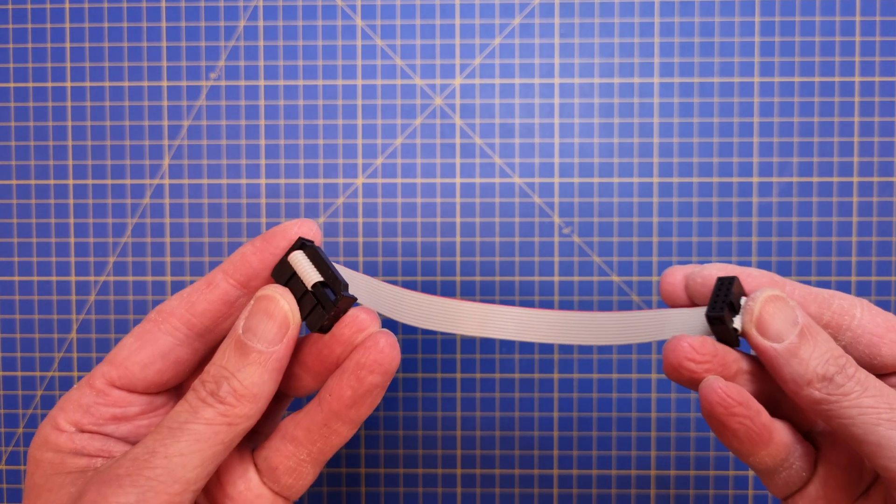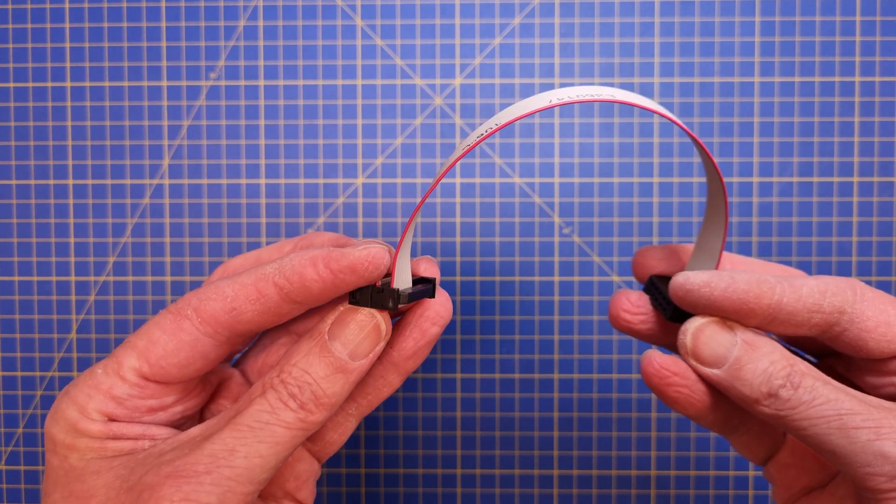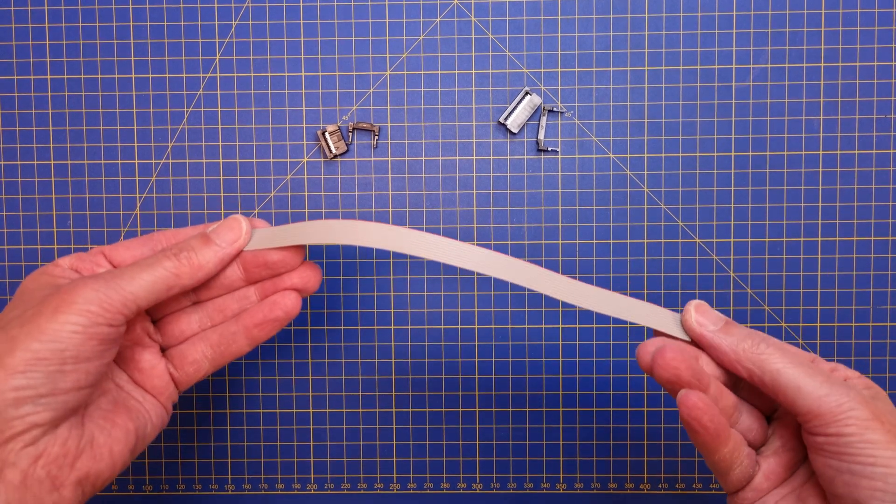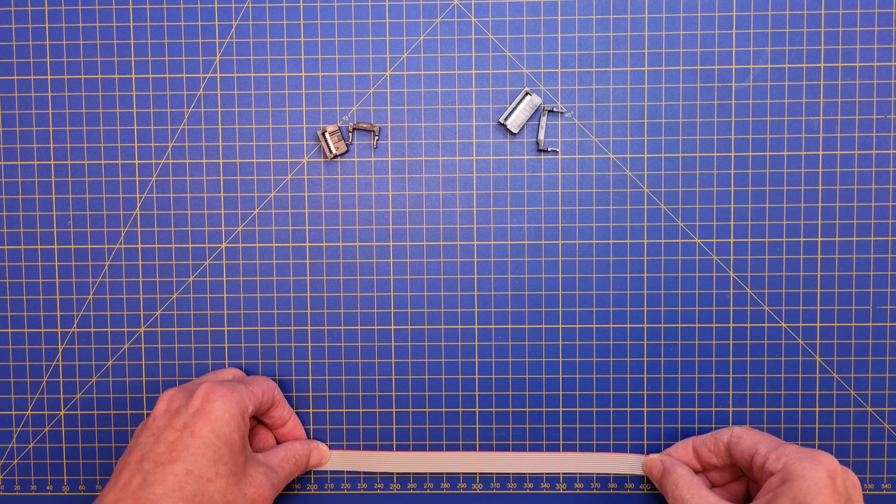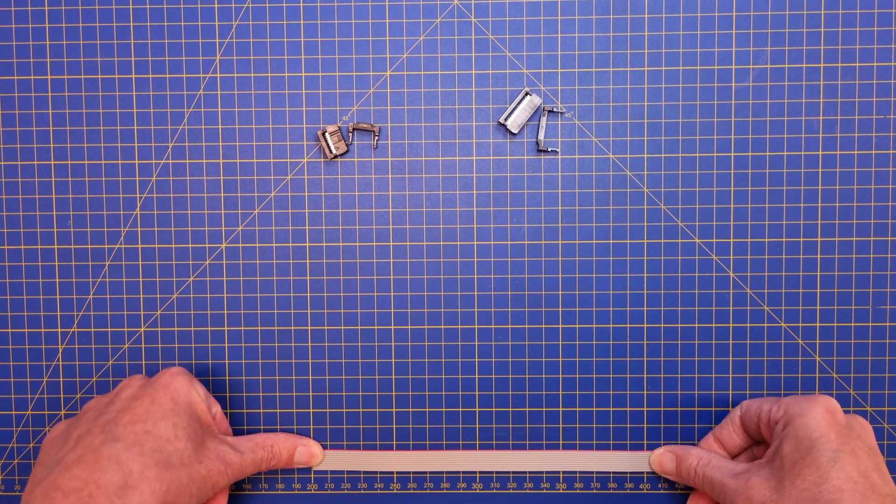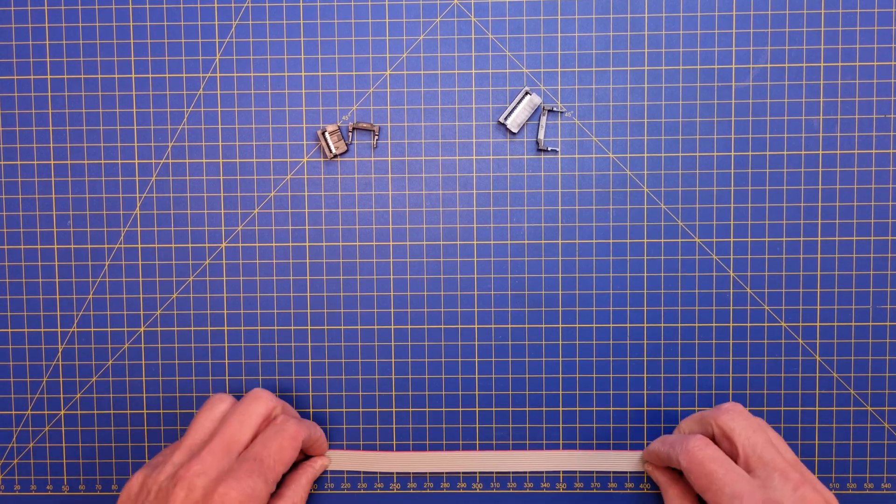Okay, so what do you need for making a 16 to 10 pin Eurorack power cable? First of all you will of course need a piece of 10 lead ribbon cable. It should have the desired length plus 2 centimeters. So in my case we end up with around 20 centimeters.